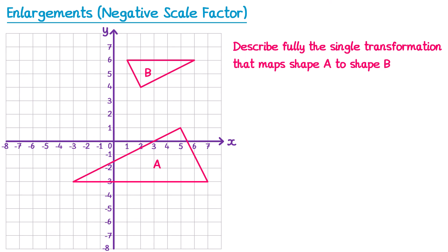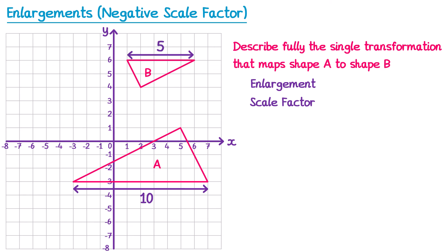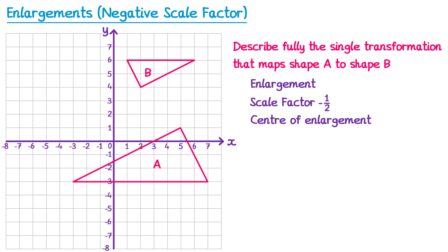Let's try another example. It's an enlargement. Comparing corresponding lengths, 10 squares on shape A corresponds to 5 squares on shape B — the shape got smaller, it's half the size. Since it also flipped, the scale factor is negative one half. Connecting corresponding points to find the centre of enlargement, they cross at (3, 3).